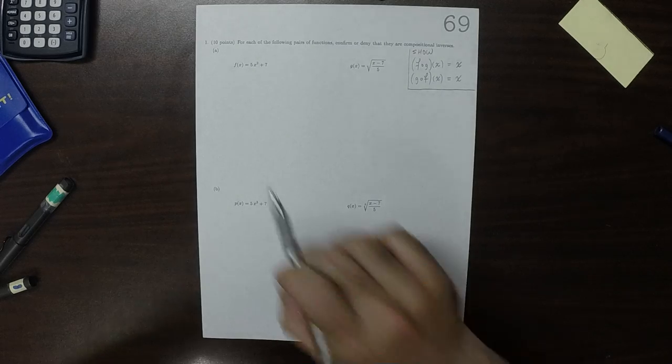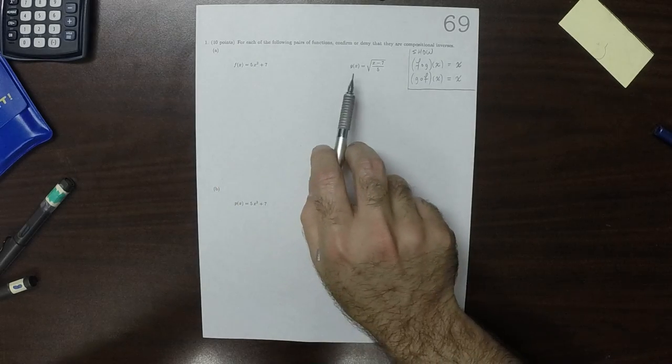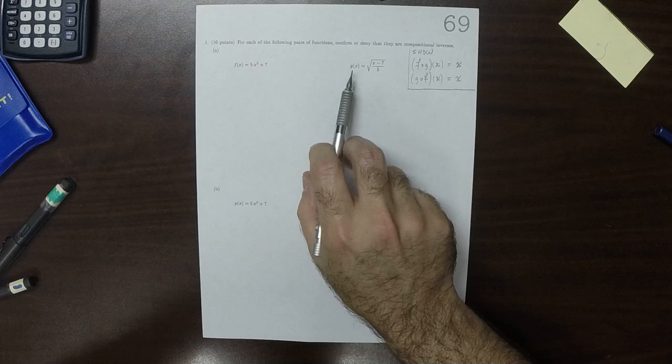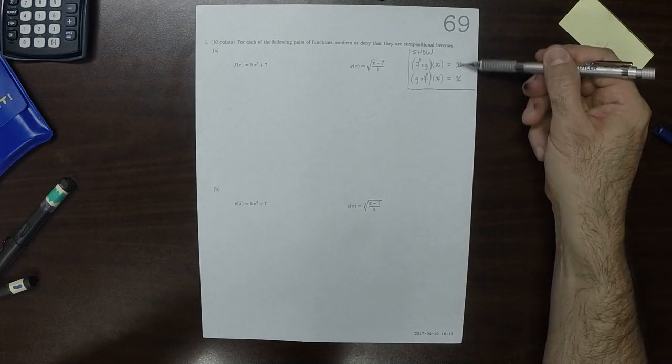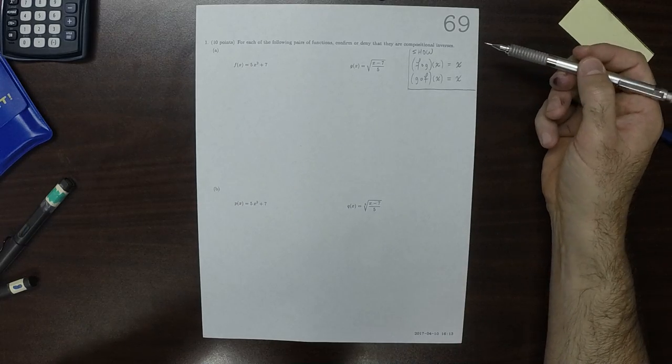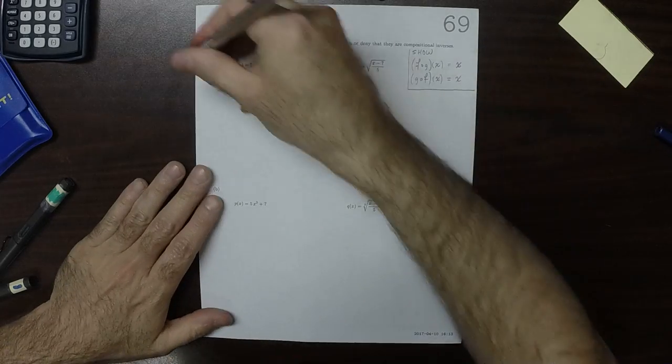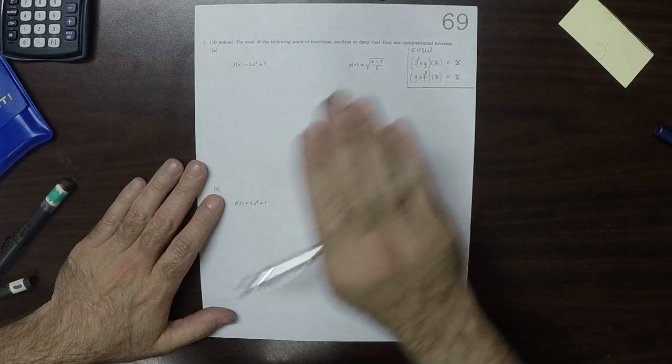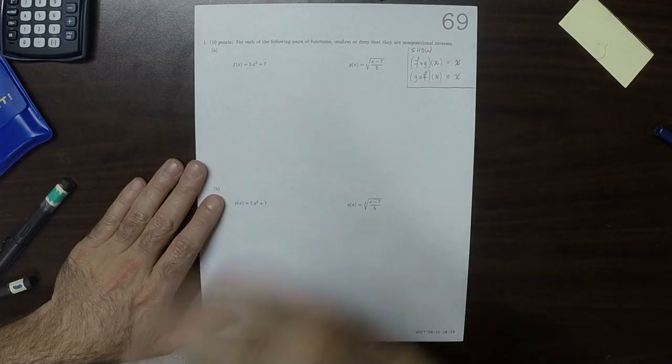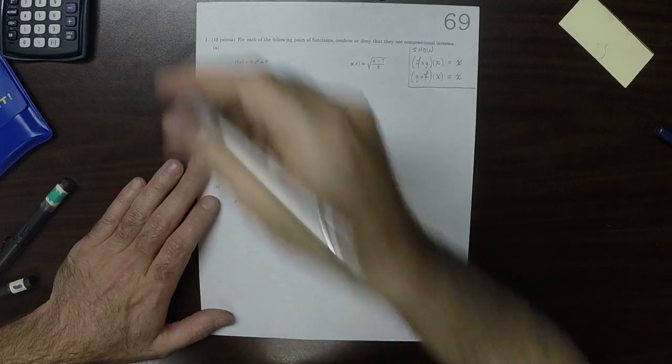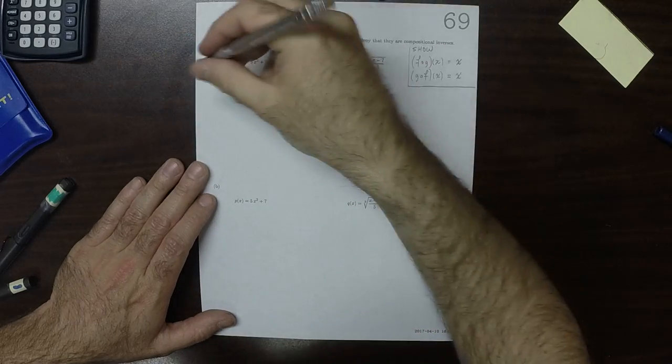So as it turns out, for this pair, we're going to get one of these is true but not both of them. So I'll do the true one first, but it would be enough to only do the false one and then stop there.